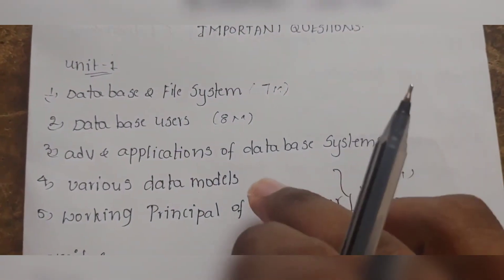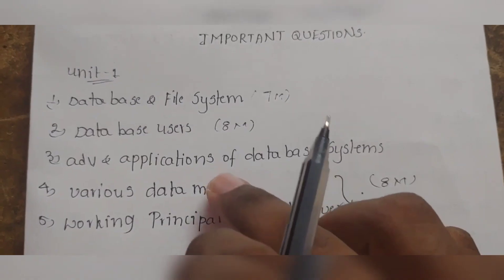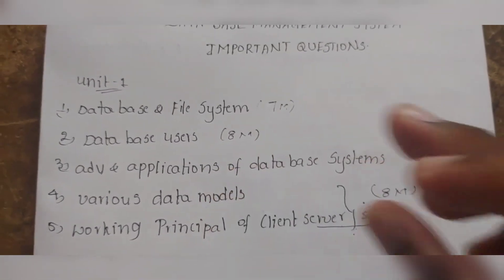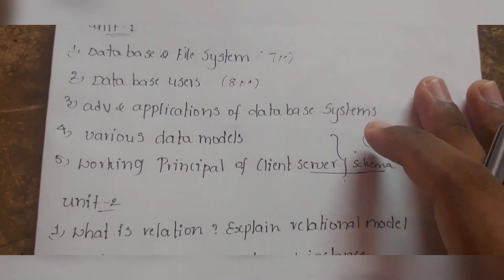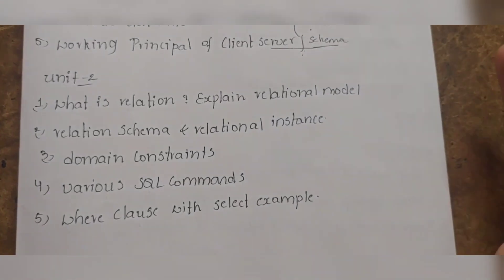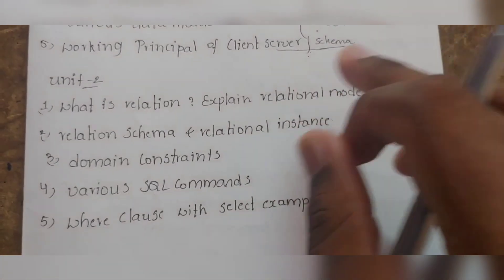Data models 8 marks, working principle client server 8 marks. This important questions video covers both JNTK R19 and R20.